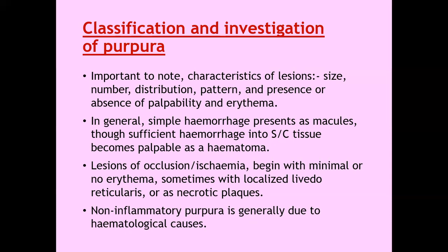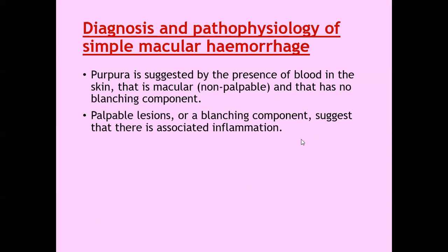The non-inflammatory purpura is generally due to hematological causes. Purpura is suggested by the presence of blood in the skin that is macular, non-palpable, and has no blanching component. For a diagnosis of purpura: number one, purpuric lesions are non-blanchable, and number two, they are non-palpable. Palpable lesions or a blanching component suggest that there is an associated inflammation.